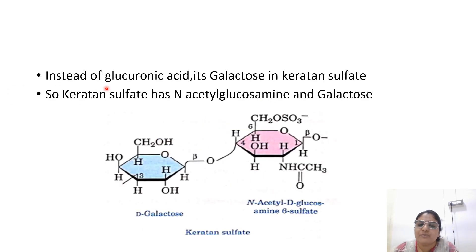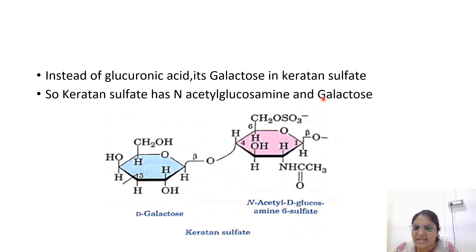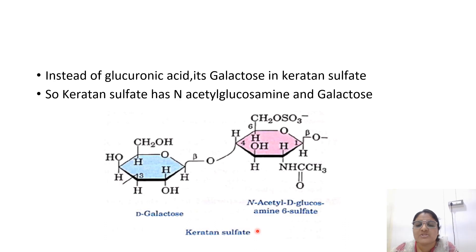Instead of glucuronic acid, it is galactose in keratan sulfate. So keratan sulfate has N-acetylglucosamine and galactose. That is the structure of all glycosaminoglycans, which is very important for all competitive examinations.